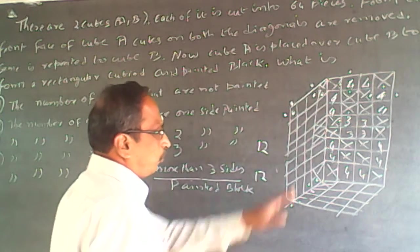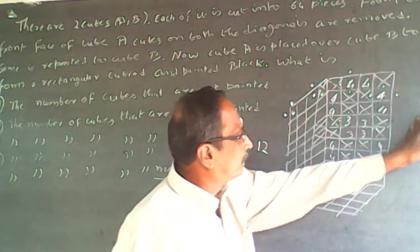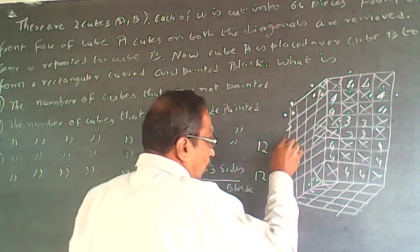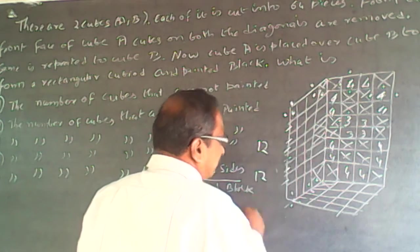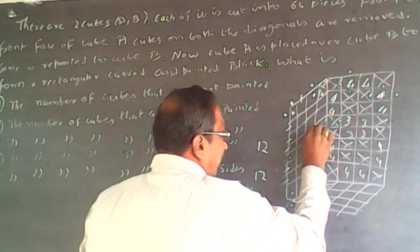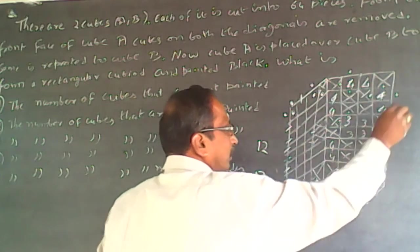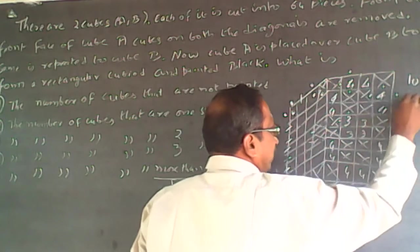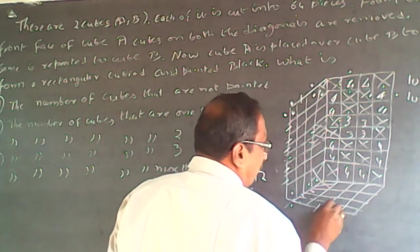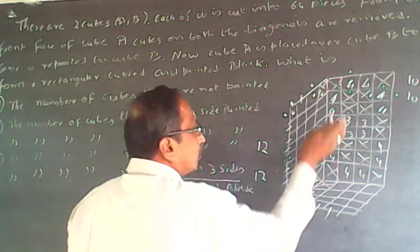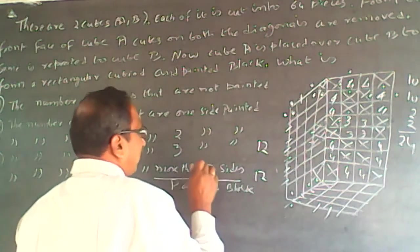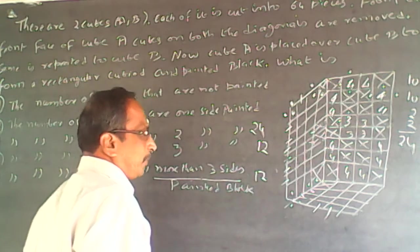So painted 3 sides also will be 12: 4 cubes on one side, plus 4 on the opposite side, plus 4 more in between — totaling 12. Now coming to painted 2 sides: counting across the faces we get 8, and because these 2 cubes have been removed and are painted here and here, it will be 10 on this face. The opposite side will also be 10 more. Adding the remaining 2 plus 2, painted 2 sides will be 24.